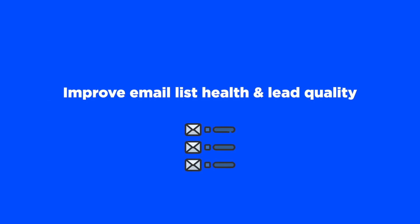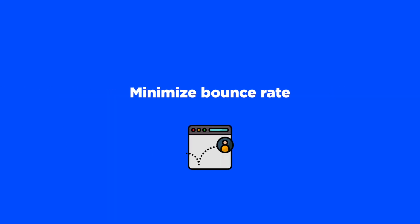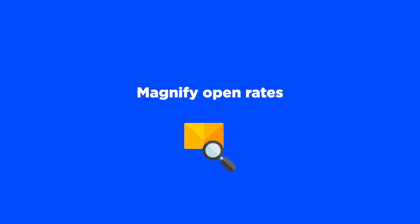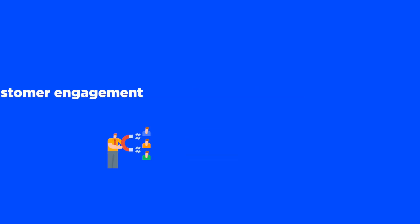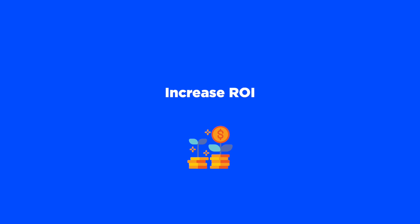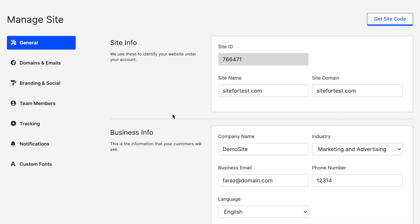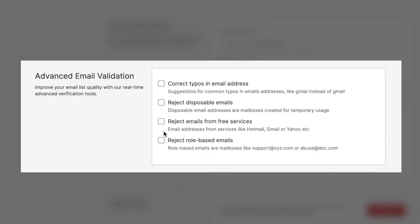With advanced email validation, get rid of unwanted and poor quality contacts, boost metrics, and reduce bounces. Validate emails entered on your forms, pop-ups, and landing pages in real time and ensure you have a clean and healthy email list. It improves your email list health and lead quality, minimizes your bounce rate, magnifies your open rates by removing typos and fakes, increases customer engagement, and increases your return on investment. So enable advanced email validation now and start capturing high quality leads.